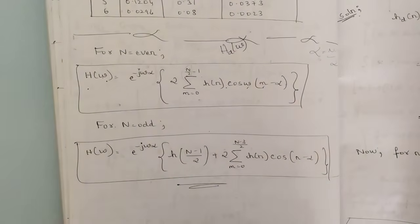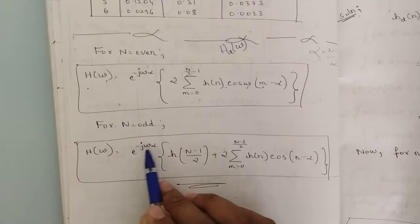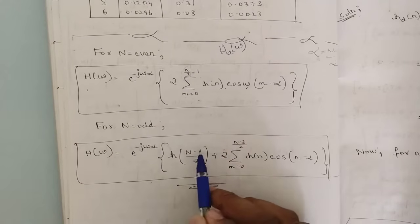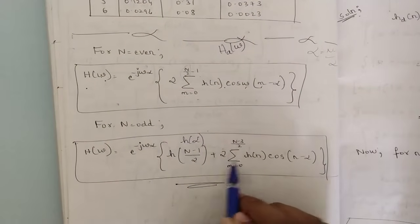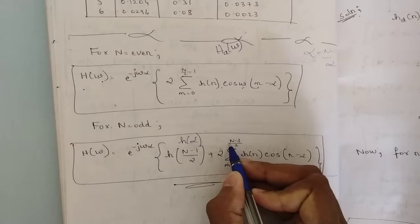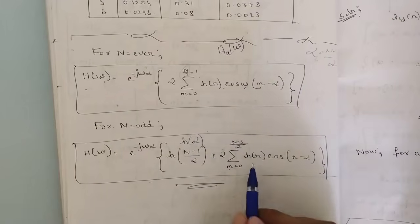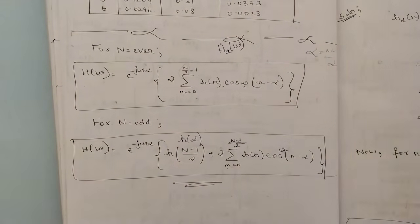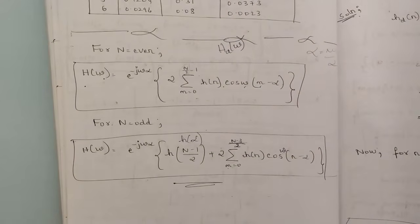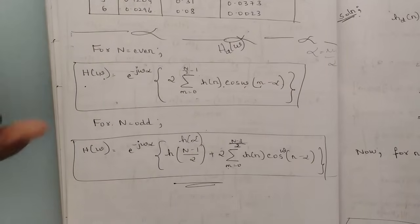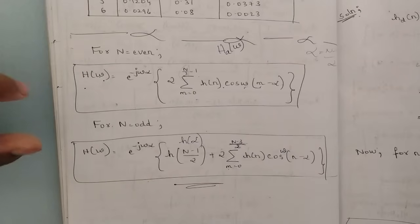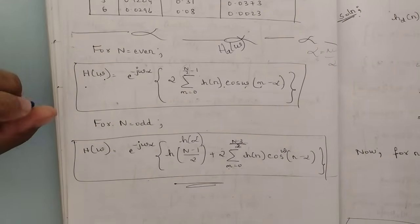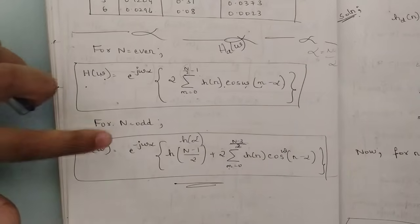When the filter length is odd, the formula is: H(ω) = e^(−jωα) × [H(α) + 2 × Σ[n=0 to (N−3)/2] H(n) cos(ω(n − α))]. Mostly the filter length will be odd, so give preference to this formula. Even filter lengths are rarely asked in exam problems.